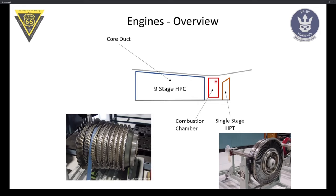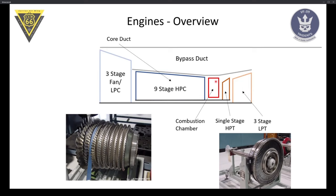The F110 Tomcat engine is an afterburning turbofan, so we have a core engine and an outer bypass engine. Before air enters the compressor, at the very front we have a three-stage fan slash low pressure compressor. It sits on its own shaft which is not mechanically linked to the core shaft — it's independent — but it is mechanically linked to the three-stage low pressure turbine. The hot gases passing through the HPT still have a good deal of energy left, and that energy is used by the LPT to drive the three-stage fan and LPC.